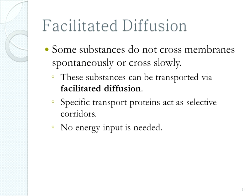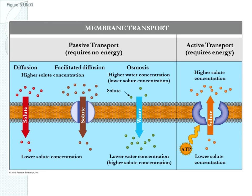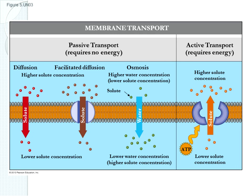The third type of transport is facilitated diffusion. Sometimes you want to get a solute across the membrane but it's not permeable — in that case, we use a transport protein to get it across the cell membrane. We don't need any energy input because things are still moving down their concentration gradient from high concentration to low. The difference between facilitated diffusion and regular diffusion is that in regular diffusion the solutes can freely pass through the membrane (lipid-soluble or gases), while in facilitated diffusion they're not soluble across the membrane, so they need a protein to help them.